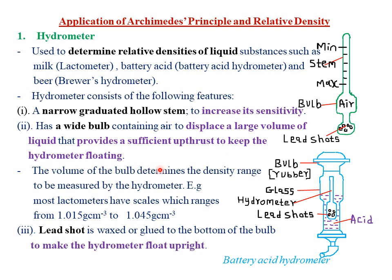The volume of the bulb determines the density range to be measured by the hydrometer. For example, for a lactometer — used to measure the relative density of milk — the scale typically ranges from 1.015 g/cm³ to 1.045 g/cm³. The lower value (1.015) is on the upper end and the maximum value (1.045) is on the lower end.